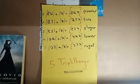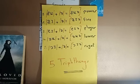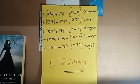So a triphthong is a kind of three vowels in one — that's the meaning of a triphthong. These are the English five triphthongs, which are made of five diphthongs plus the schwa sound. We will cover them now.